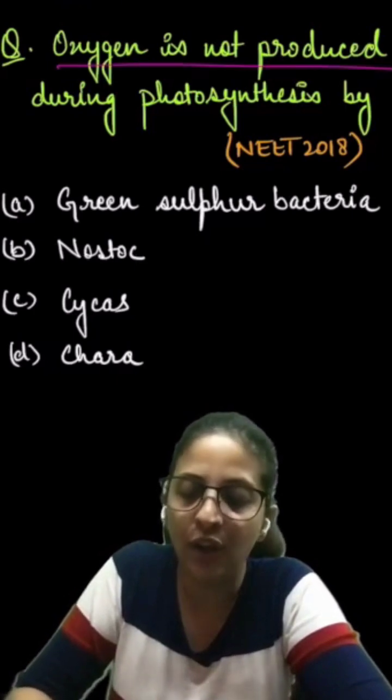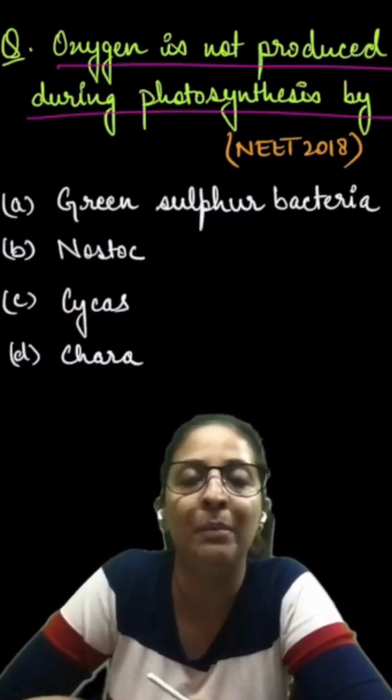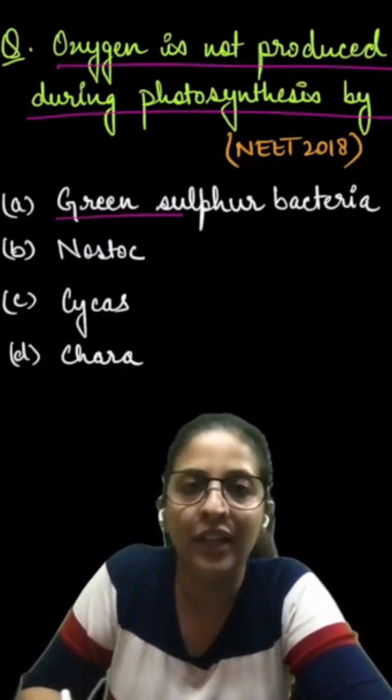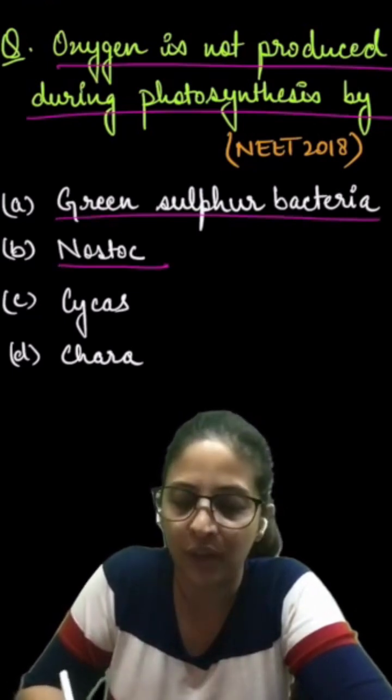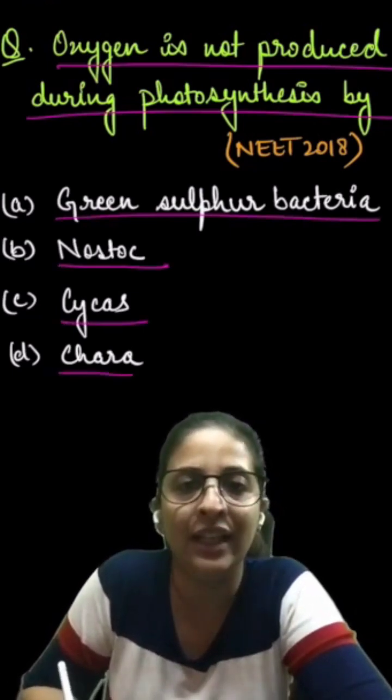Now the question says oxygen is not produced during photosynthesis by, and the options are A. Green Sulphur bacteria, B. Nostoc, C. Cycus and D. Chara.